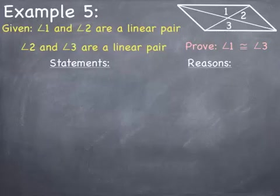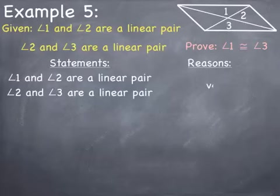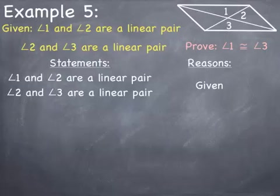Example 5: we are given that angle 1 and angle 2 are a linear pair, and that angle 2 and angle 3 are a linear pair. We are asked to prove that angle 1 is congruent to angle 3. Always start with what you are given. Looking at the diagram, you can see angles 1 and 3 are vertical, and the vertical angles theorem says vertical angles are congruent — but we cannot use that, because it is not part of our given. We can only use that angles 1 and 2, and angles 2 and 3, are linear pairs.